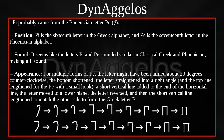For multiple forms of PE, the letter might have been turned about 20 degrees counterclockwise, the bottom shortened, the letter straightened into a right angle, and the top line lengthened for the PE with a small hook. A short vertical line added to the end of the horizontal line, the letter moved to a lower plane, the letter reversed, and then the short vertical line lengthened to match the other side to form the Greek letter PI.